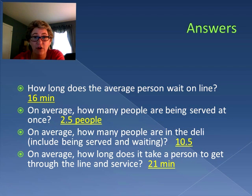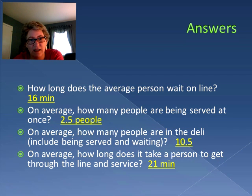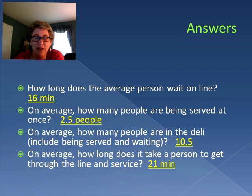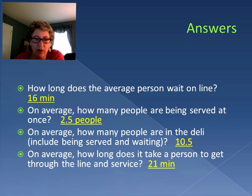Getting back to our original questions, now we have the answers. How long on average does a person wait online? 16 minutes. How many people are being served at once? Two and a half. How many people are in the deli? 10 and a half. And how long does it take to get through? 21 minutes. Don't be afraid when you see half of a person or a quarter of a person in your answers — remember, we're working with averages, and averages means you're not going to get whole numbers all the time.